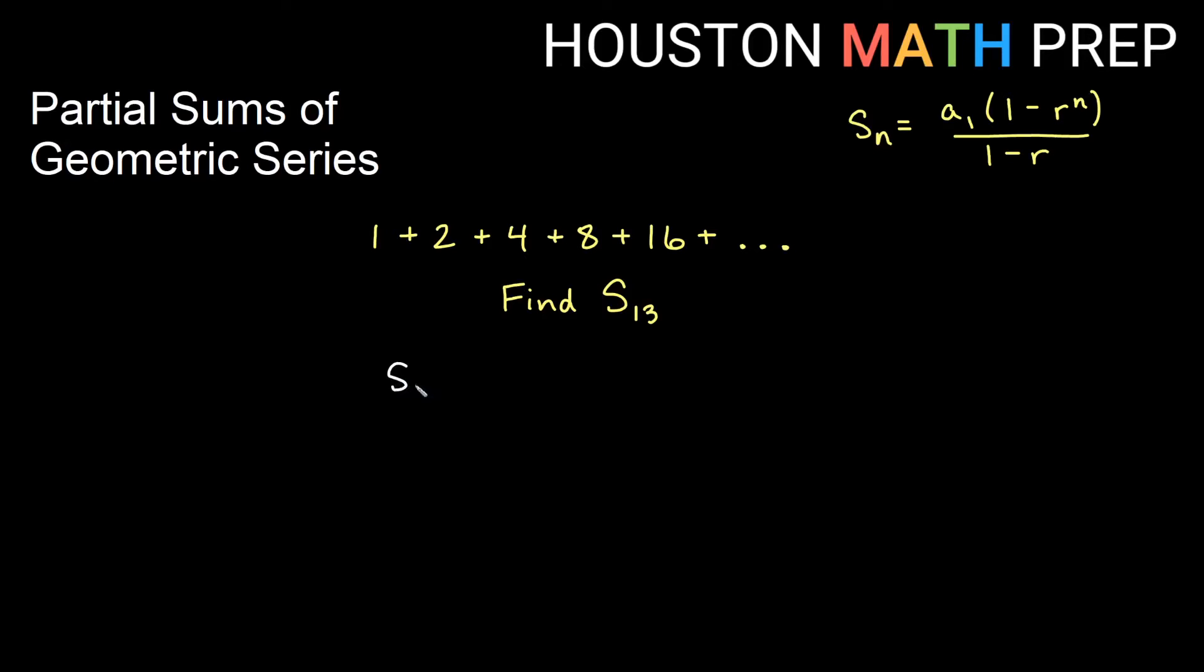So the sum of the first 13 terms is going to be the first term, which is 1 in this case, times 1 minus r to the n. What's my r here? Well, I'm repeatedly multiplying by 2. I'm doubling to get from 1 to the next. So my common ratio is 2 and if I want the first 13 terms, then that's 2 to the 13 there.